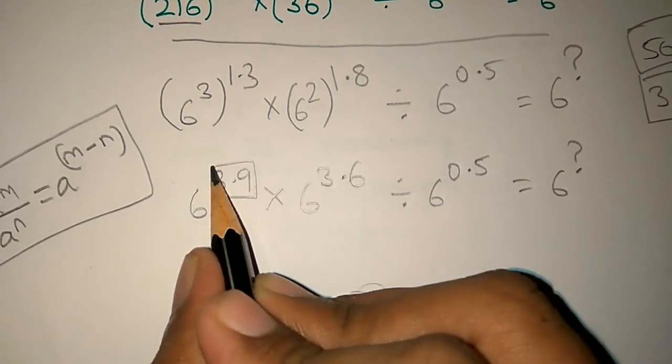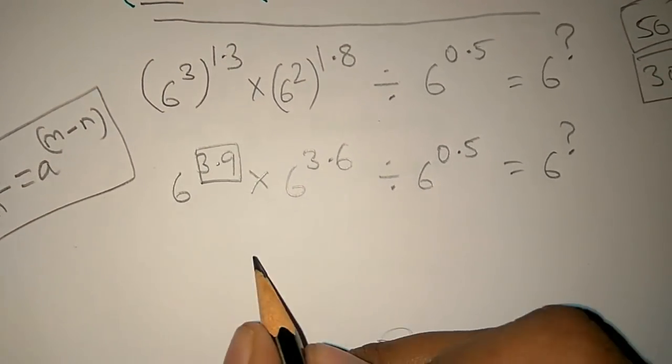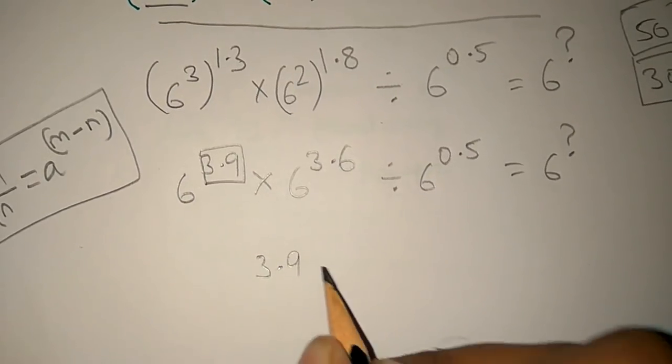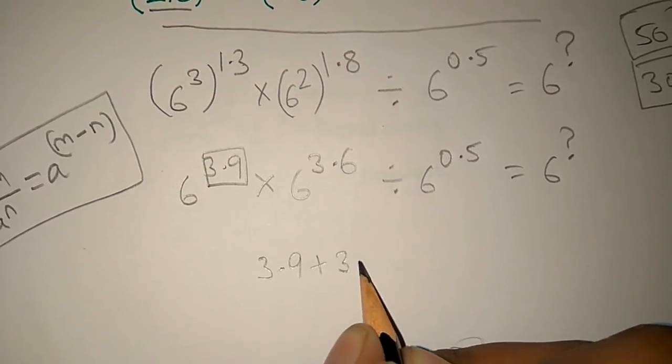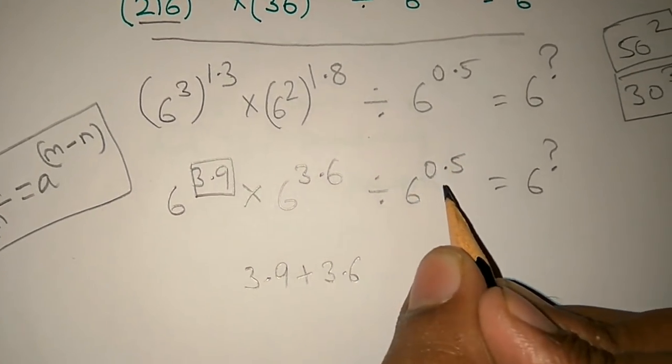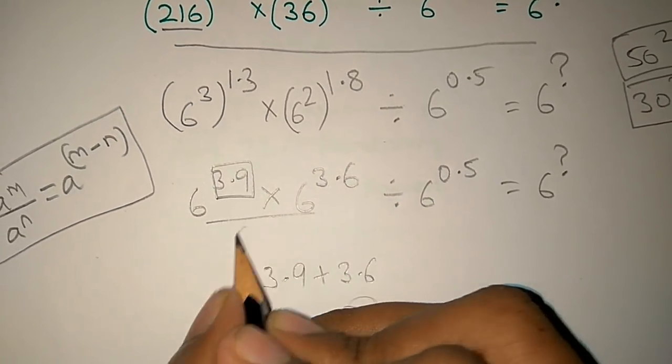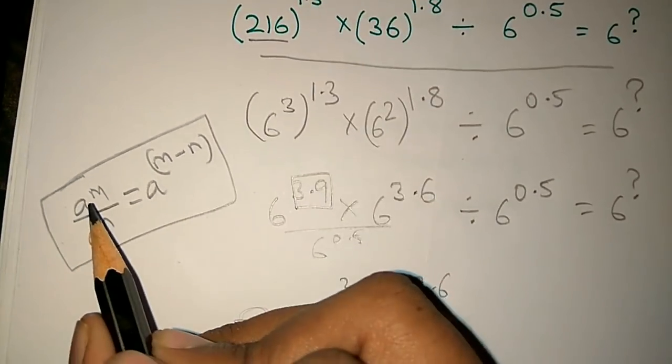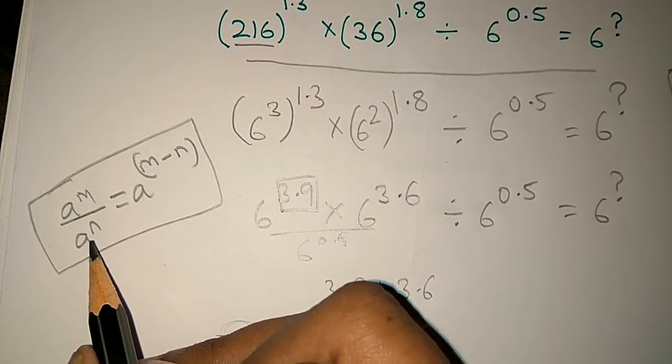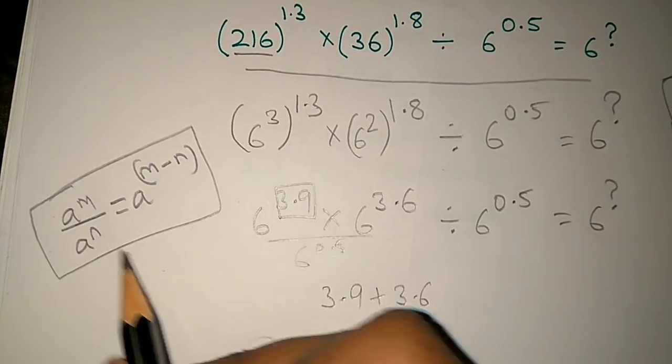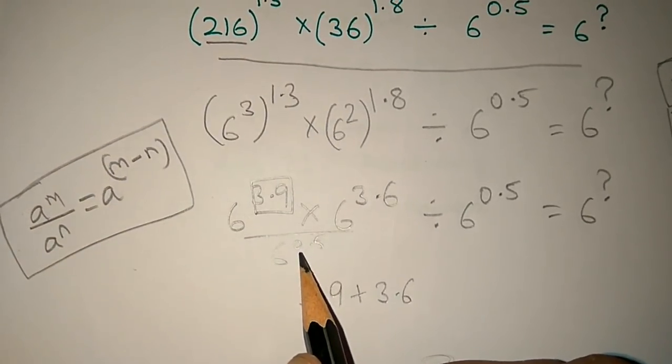Now applying the multiplication rule, 3.9 plus 3.6 equals 6 power 7.5, divided by 6 power 0.5.